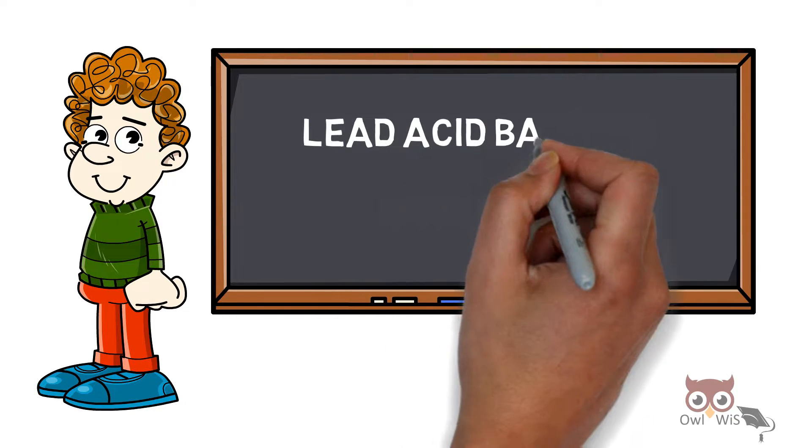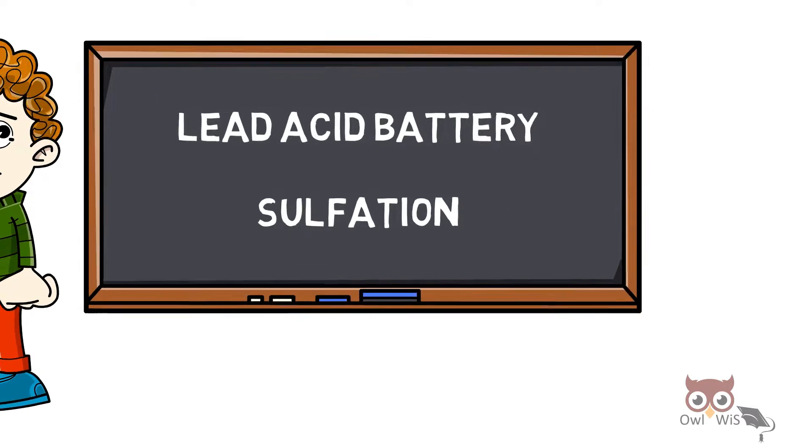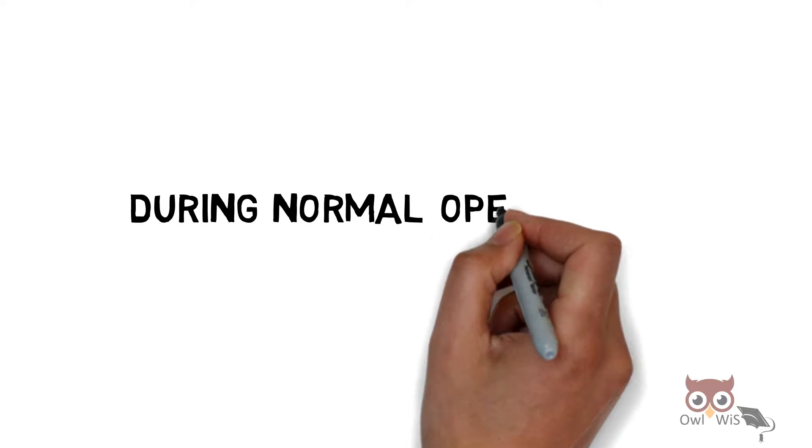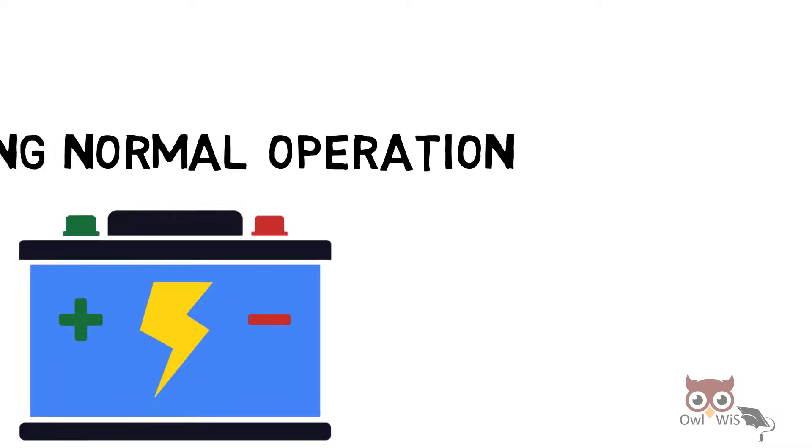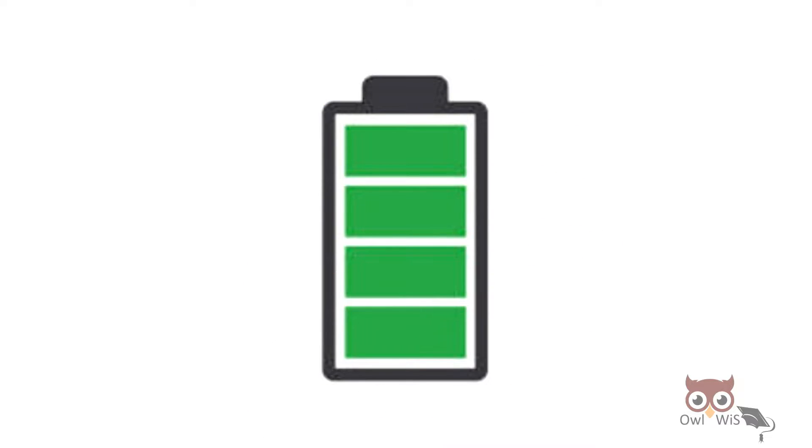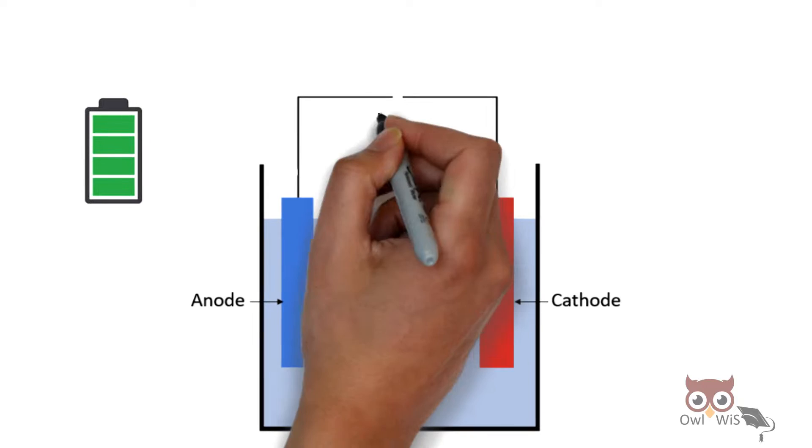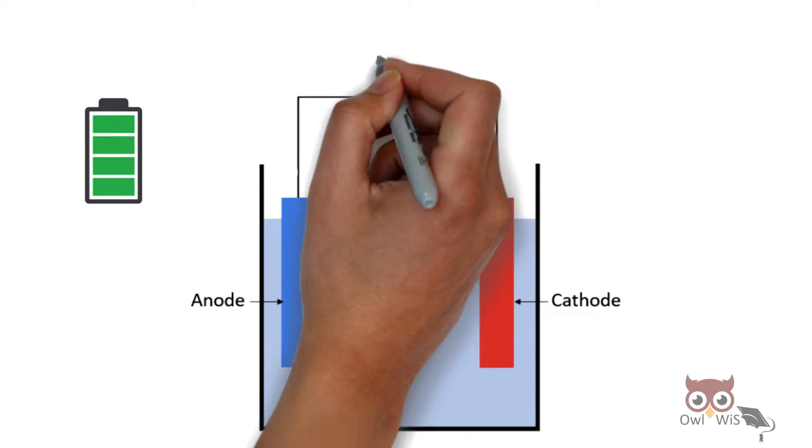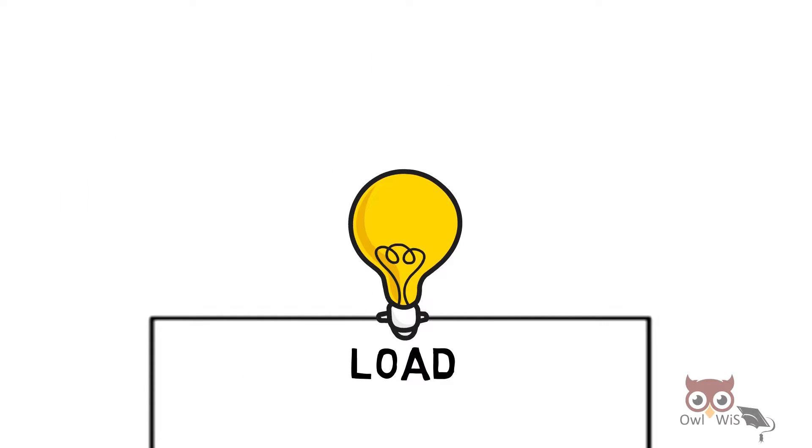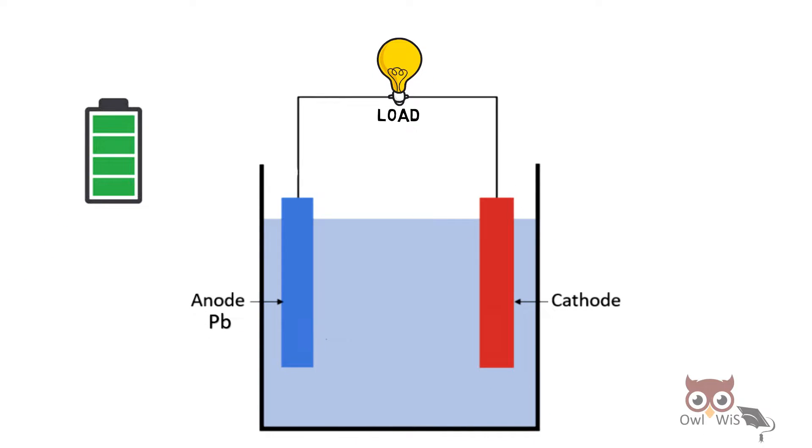During normal operation of lead-acid battery, when a battery is fully charged and a load is connected across the plates, as the load starts discharging, the lead and lead peroxide react with the electrolyte sulfuric acid to form lead sulfate.